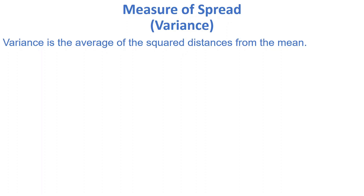The second measure of spread is variance. Variance is the average of squared distances from the mean.